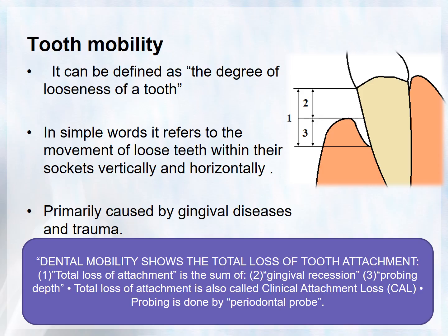What is tooth mobility? It can be defined as the degree of looseness of a tooth. It refers to the movement or loosening of teeth within the sockets, either vertically or horizontally. It is primarily caused by gingival diseases and trauma. Dental mobility shows the total loss of tooth attachment — it is the sum of gingival recession and probing depth, which is called clinical attachment loss, measured by a periodontal probe. This attachment loss is directly proportional to tooth mobility.